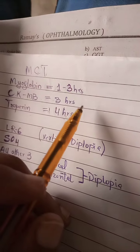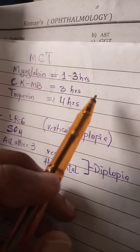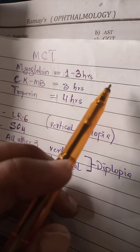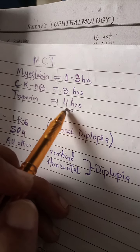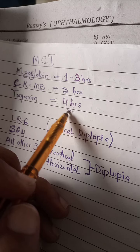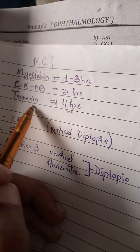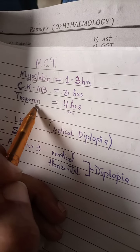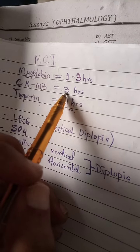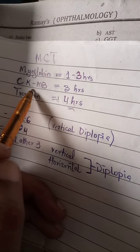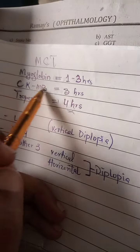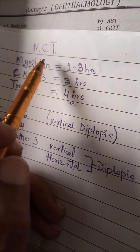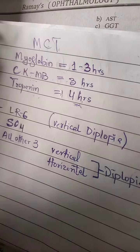Now if a question comes that a patient has myocardial infarction and four hours after that a test is done, we will answer troponin. Or after three hours, we will say it is CK-MB. In this way we can analyze the time duration of myocardial infarction. Thank you.